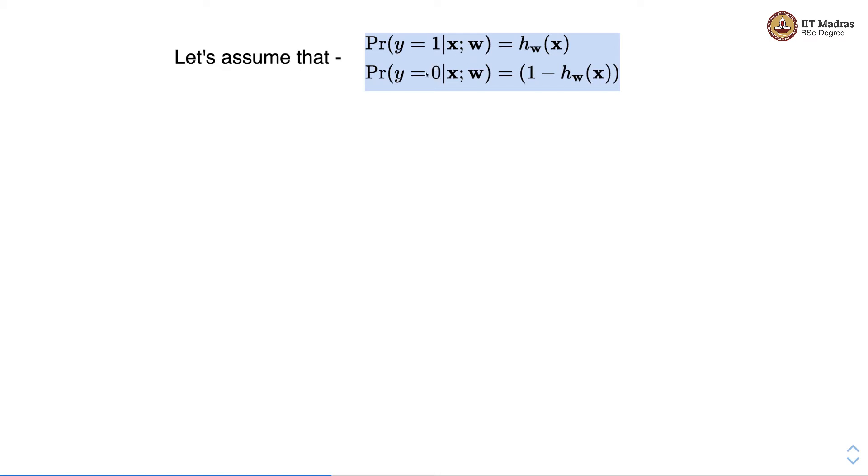Obviously the probability that the sample belongs to y equal to 0 given x is 1 minus probability of sample belonging to class 1 given the feature vector. That is how we represent these two probabilities. Now we can rewrite both these equations compactly as follows.